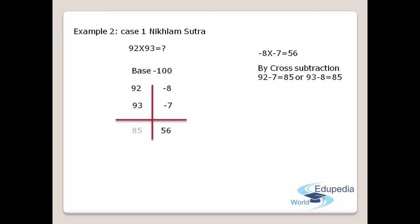Remember one thing: in the base 100, you have two zeros, and the product of the right column also has two digits — 56. So when the number of digits in the product matches the number of zeros in the base, there is no problem. If you get more than two digits as the product when the base has only two zeros, there is a small problem — we will discuss that in another example. Here you have no problem, so no need to worry. The cross subtraction gave you 85.